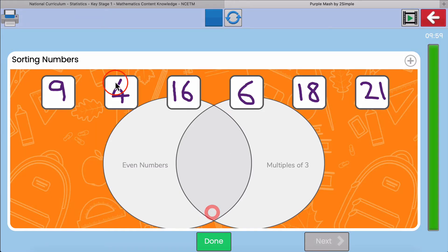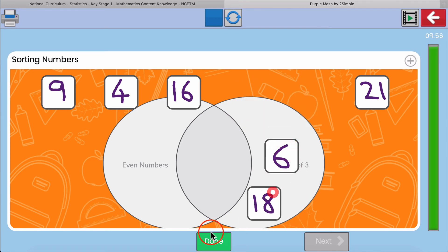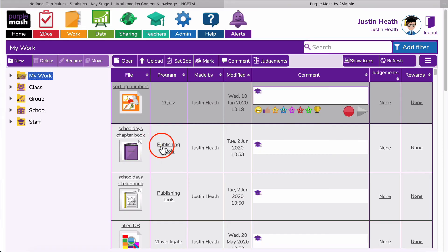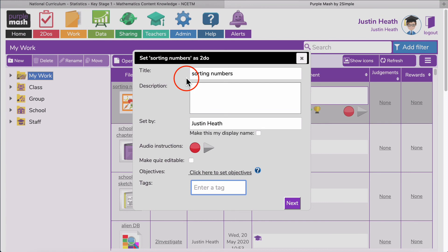I've saved a file into my folder here so I can select on it and click on set as to-do and set that activity as a to-do in the usual way.